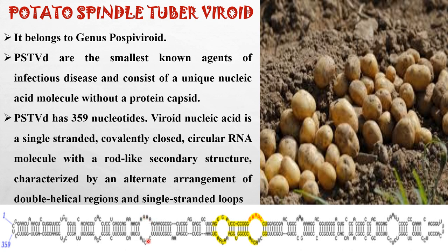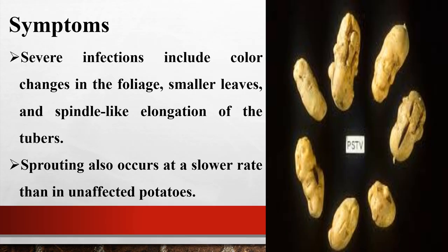Symptoms of severe infection include color change in foliage, smaller leaves, and spindle-like elongation of the tubers. Sprouting also occurs at a slower rate than in unaffected potatoes.